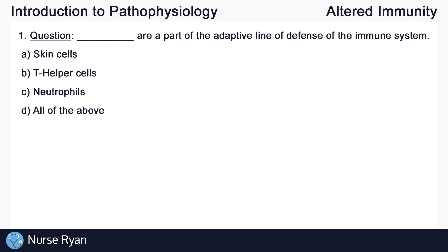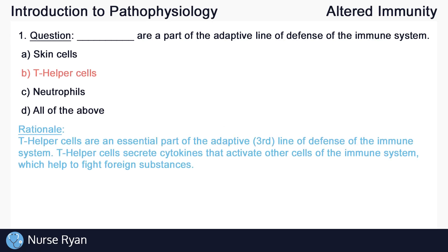Starting off with question number one: blank are a part of the adaptive line of defense of the immune system. The answer here is B, T helper cells. T helper cells are an essential part of the adaptive or third line of defense of the immune system. T helper cells secrete cytokines that activate other cells of the immune system, which help to fight foreign substances.